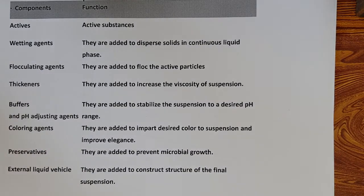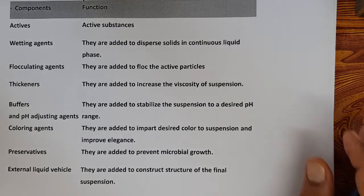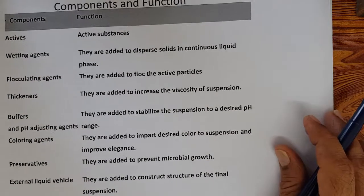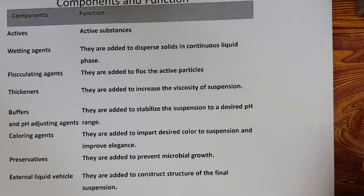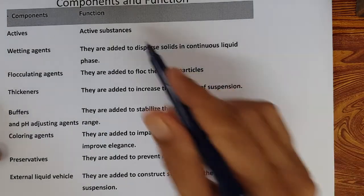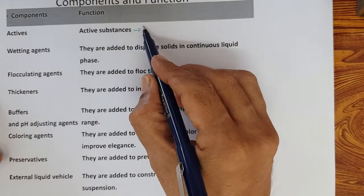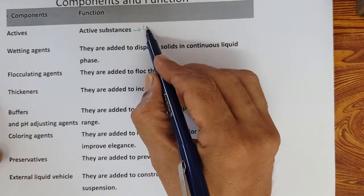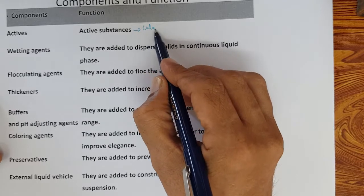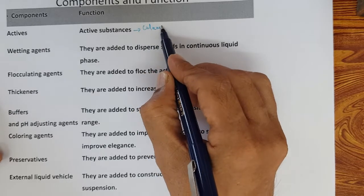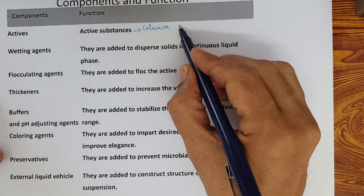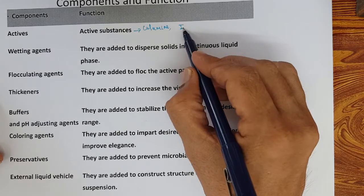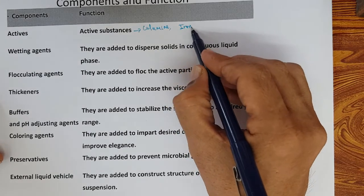What are the components of a suspension? Of course, actives. The active substance in a calamine lotion is calamine. In a liquid makeup, it is iron oxide pigments.